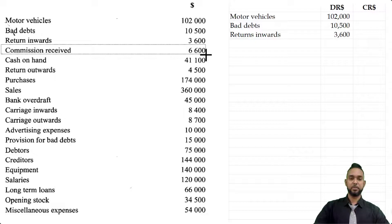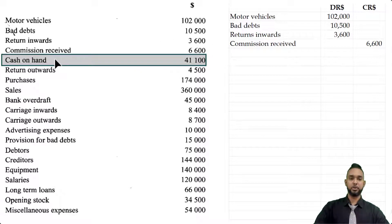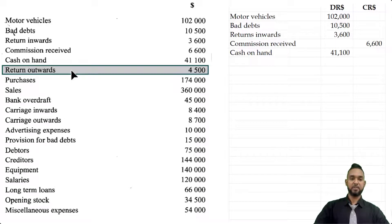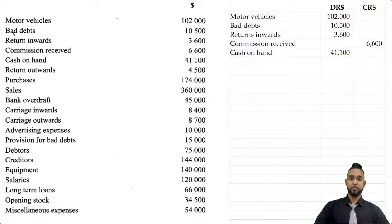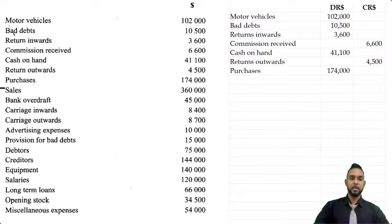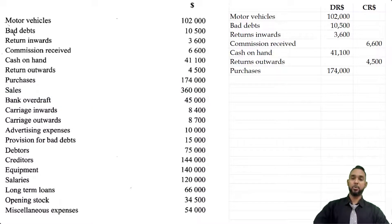Commission received is a revenue and revenues have credit balances, so that goes as the first item in our credit column. Cash on hand is an asset, so it goes in the debit column. Returns outwards at $4,500 is a reduction to purchases — purchases is an expense with a debit balance, and a reduction to a debit balance is a credit item, so returns outwards has a credit balance. Purchases itself is an expense with a debit balance. Sales is our primary revenue item and has a credit balance.